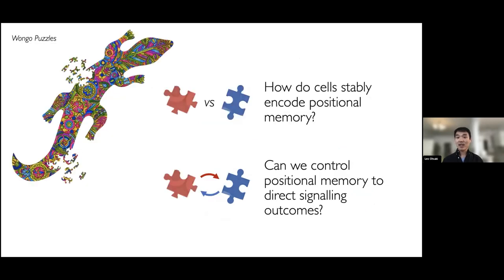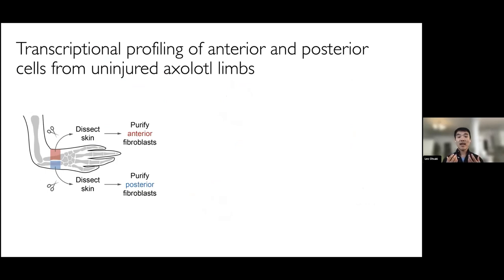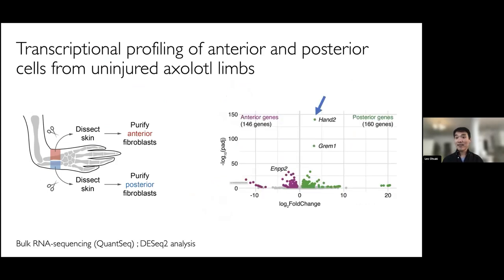How do cells stably encode different positional memories from each other? And secondly, by understanding these mechanisms, would it one day become possible to control these positional memories in order to change signaling outcomes from regenerative cells? To begin to address these questions, I performed gene expression profiling of anterior or posterior cells purified by FACS from uninjured axolotl limbs. Very interestingly, we found that over 300 genes were differentially expressed across the anterior-posterior axis, even prior to injury — so these cells are clearly strongly primed to be different from one another.